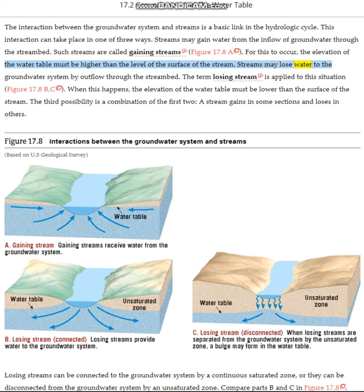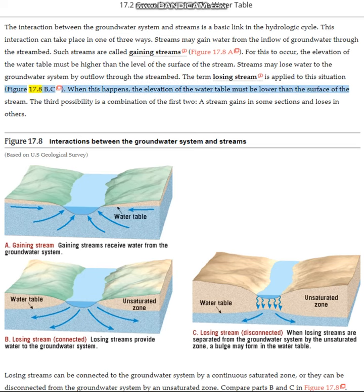Streams may lose water to the groundwater system by outflow through the stream bed. The term losing stream is applied to this situation. When this happens, the elevation of the water table must be lower than the surface of the stream.